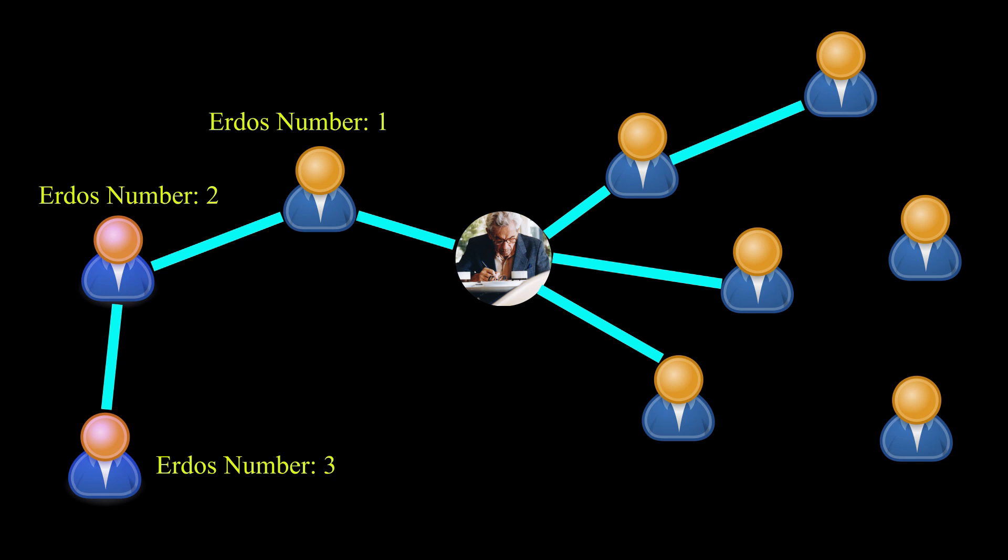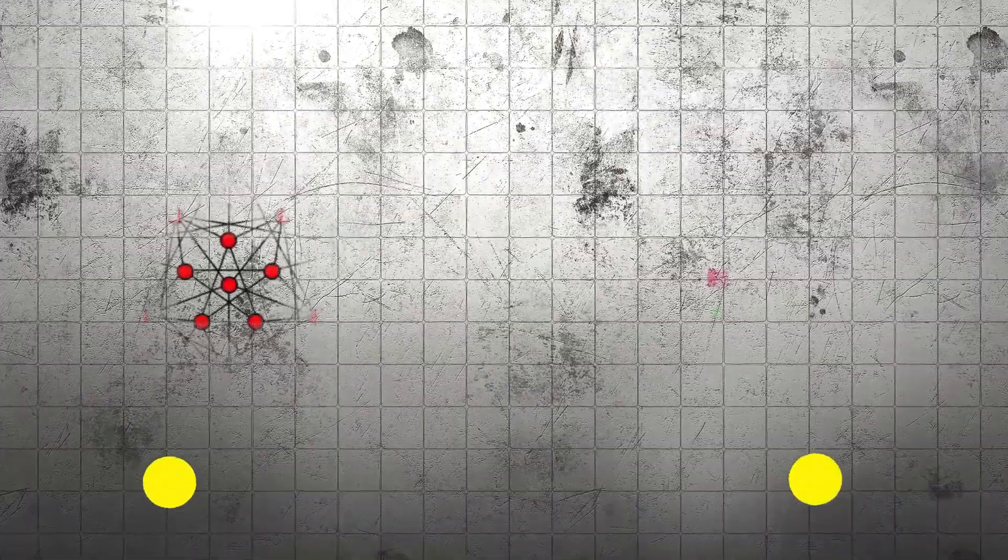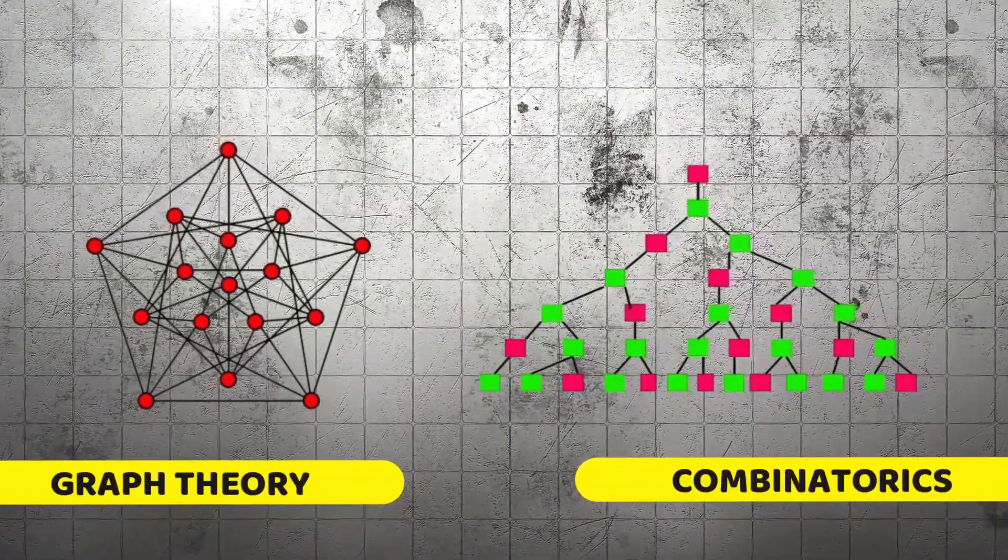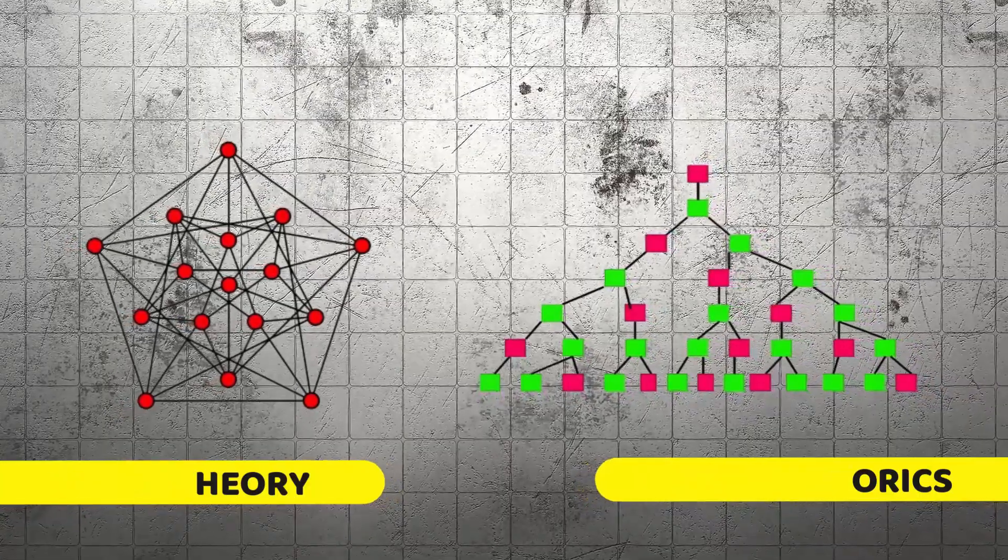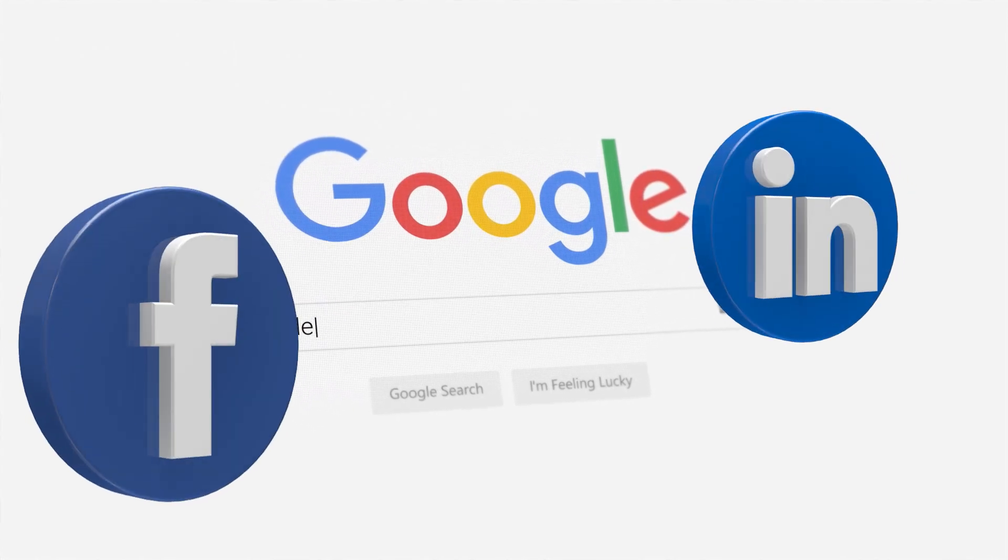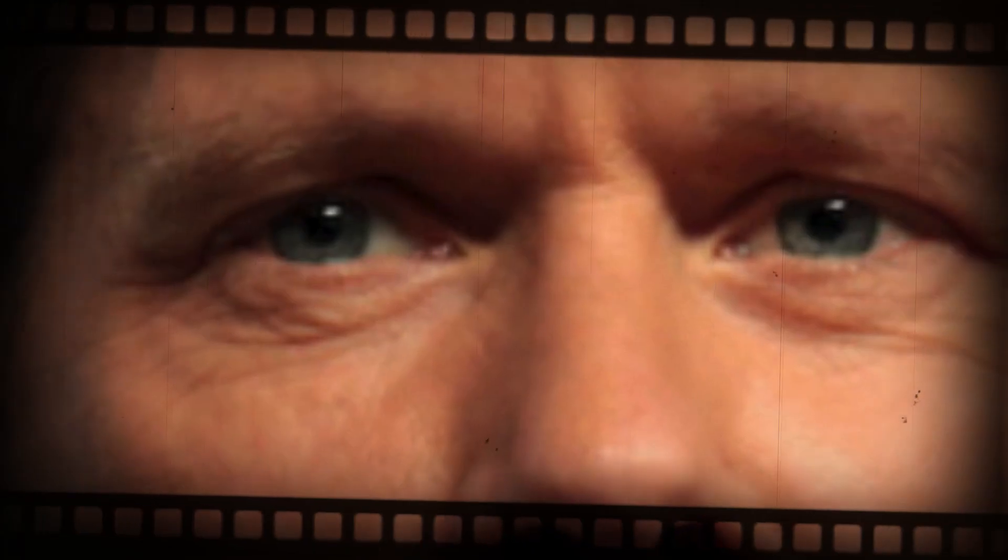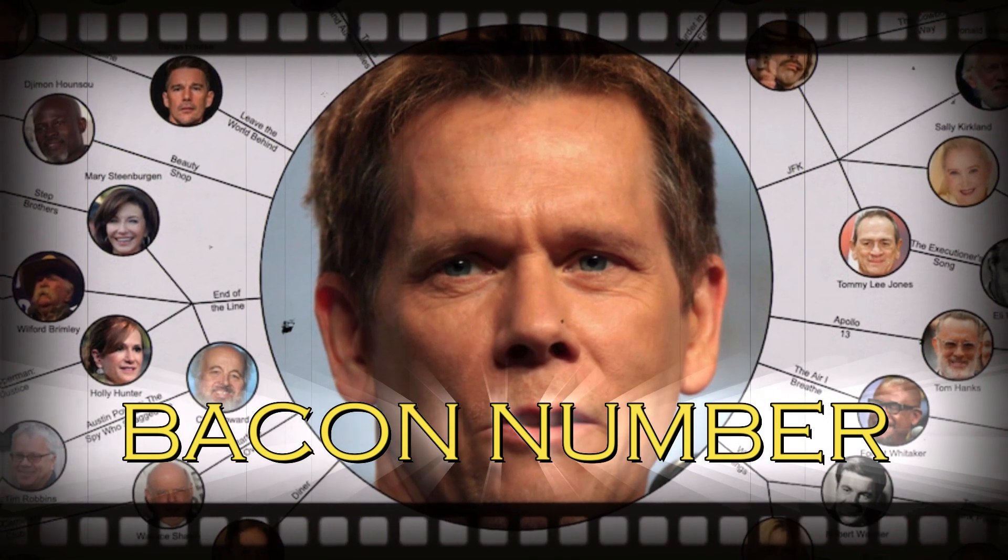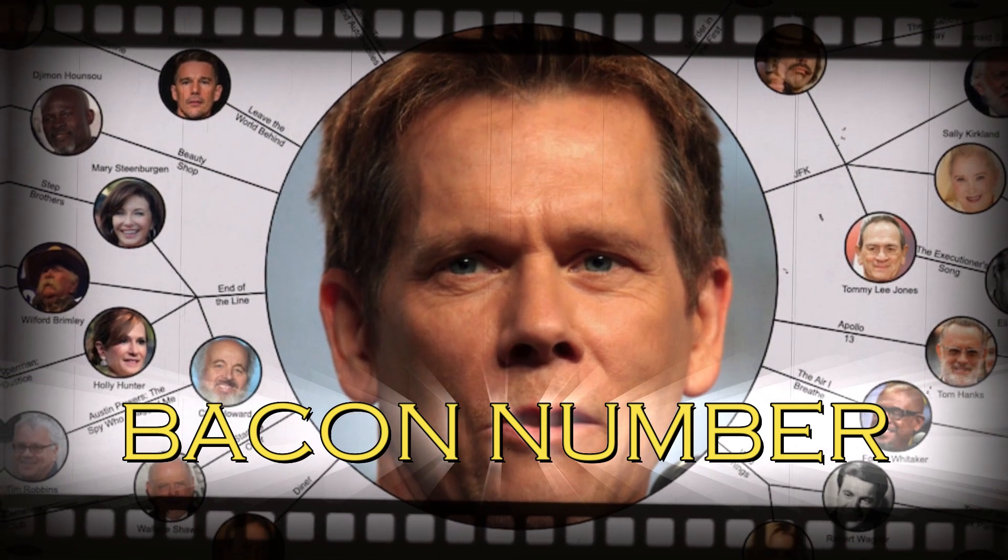If you wrote a paper with Erdos, your Erdos number was 1. If you wrote a paper with someone who had worked with Erdos, your number was 2. The lower your Erdos number, the closer you were to mathematical greatness. The impact of Erdos's work didn't stop at pure math. His discoveries in graph theory and combinatorics laid the groundwork for computer science, network theory, and even modern internet algorithms. The very structure of social networks, Facebook, LinkedIn, even Google's search engine, owes something to Erdos's mathematical ideas. And his influence went beyond academia. Just like the Erdos number, Hollywood actors started tracking their Bacon number based on how closely they were connected to Kevin Bacon in films. Erdos had accidentally made mathematics cool.